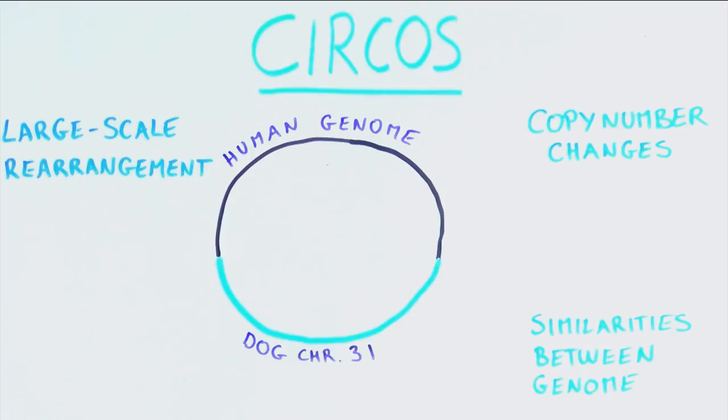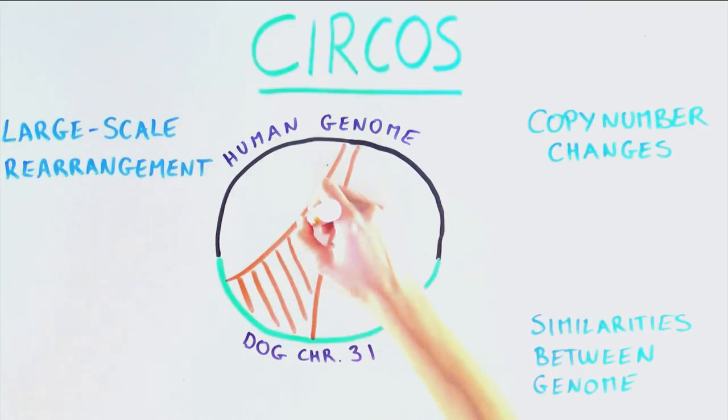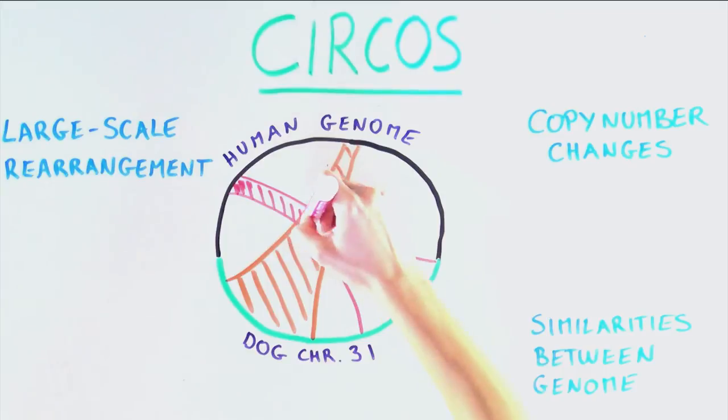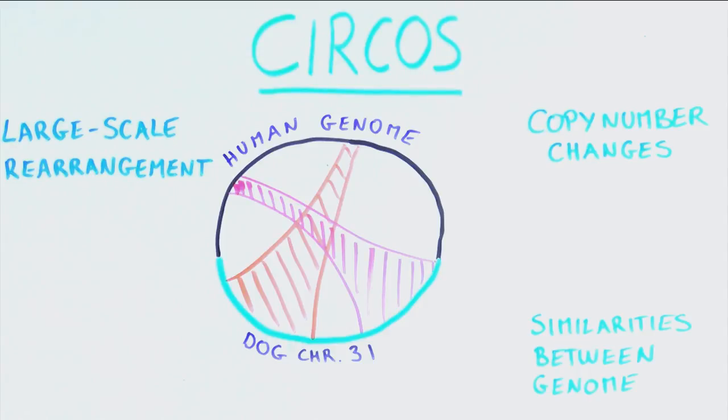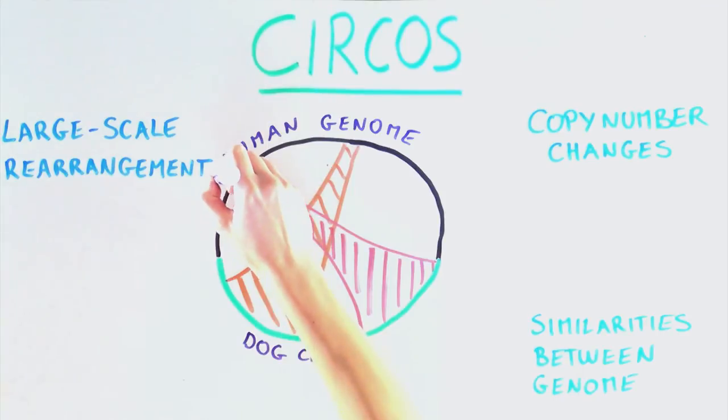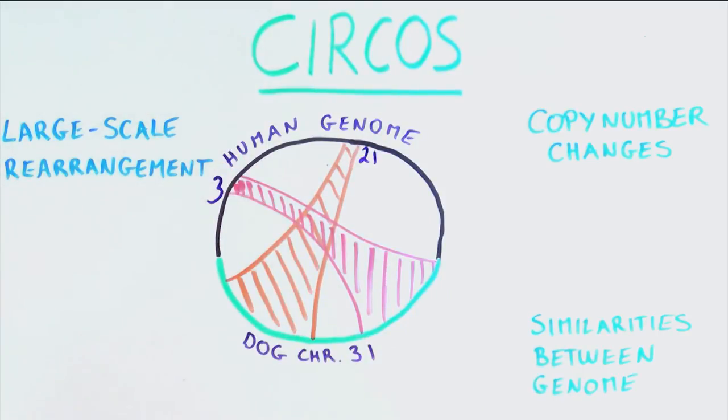If there are any similarities between a particular sequence of dog chromosome 31 and the human sequence, we represent this by drawing a thick line spanning the dog DNA sequence with the matching sequence in the human genome. This way of visualizing data may reveal interesting relationships. For example, we may see that dog chromosome 31 is actually very similar to human chromosomes 3 and 21.